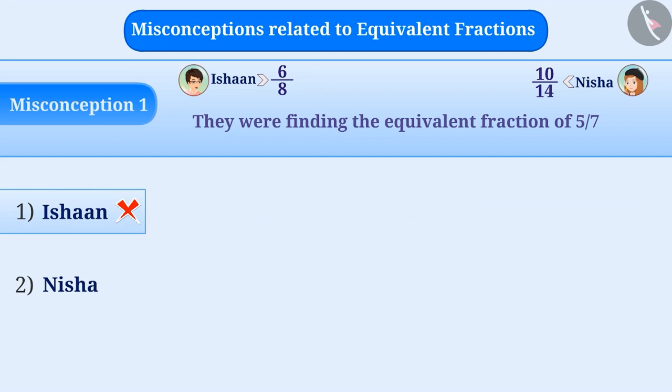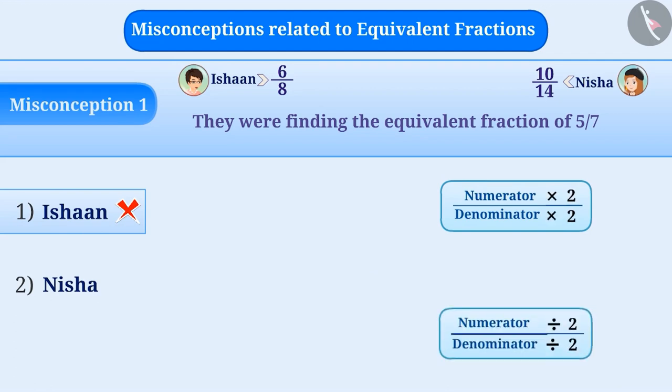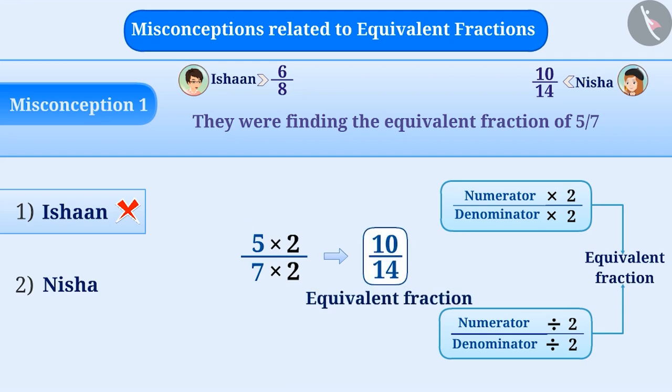The correct understanding is that whenever the numerator and denominator of a fraction is multiplied or divided by the same number, then we get its equivalent fraction. Here, Nisha has multiplied the numerator and the denominator of 5/7 with 2 and obtained the fraction 10/14. This is an equivalent fraction of 5/7. Therefore, option 2 is the correct answer.